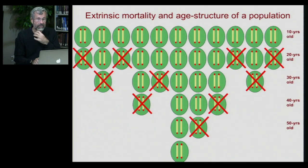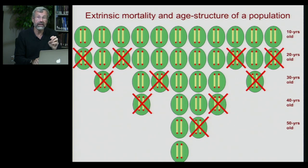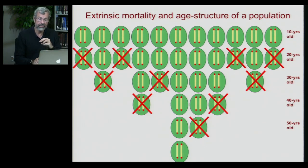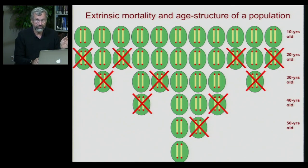Let's think about this. We have extrinsic mortality in the age structure of a population — lots of 10-year-olds, but because of predation and fighting or whatever else, there may be very few left by the age of 50 or 60.